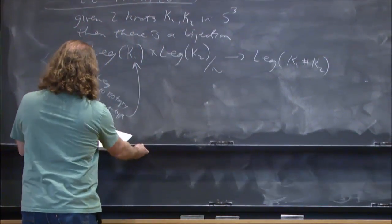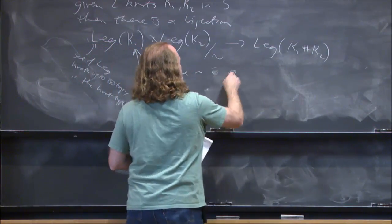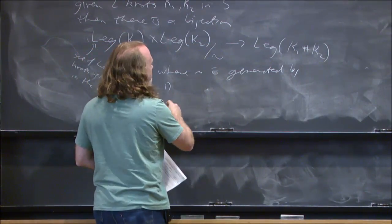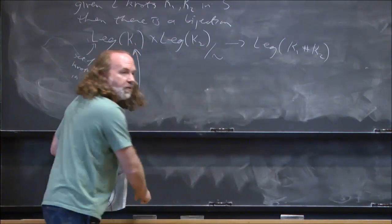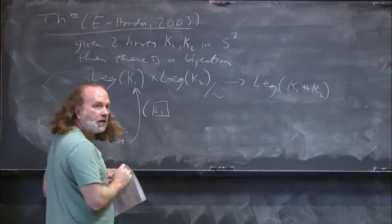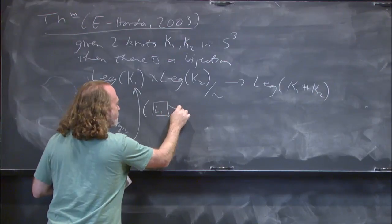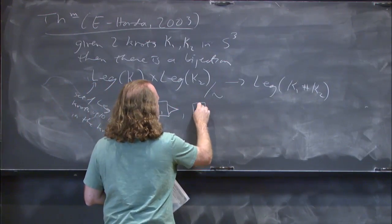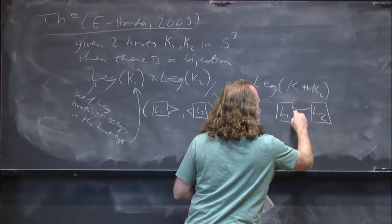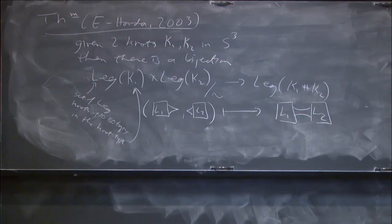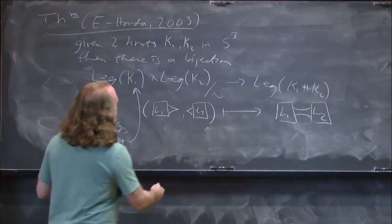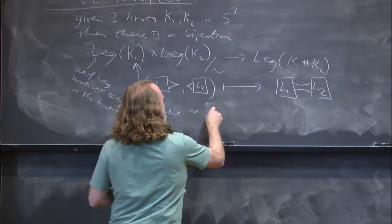The equivalence is generated by two operations. If you have L1 and L2 — L for Legendrian — with little cusps in their front diagrams, the map just sends them to L1 connect L2, where those cusps are removed and you connect the knots. It's kind of the obvious map. It's not exactly 100% clear it's well-defined, but you can make it well-defined diagrammatically.